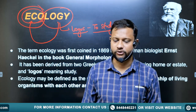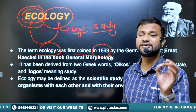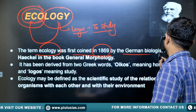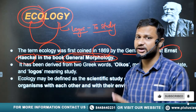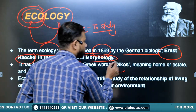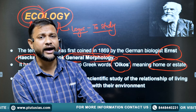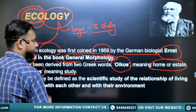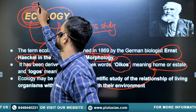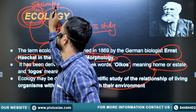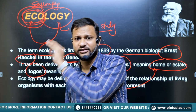The term ecology was first coined in 1869 by the German biologist Ernst Haeckel, in the book General Morphology. It is derived from two Greek root words: oikos — spelled O-I-K-O-S — meaning habitat, home, or estate, and logis meaning study. So ecology simply means the study of habitat or your surrounding environment.